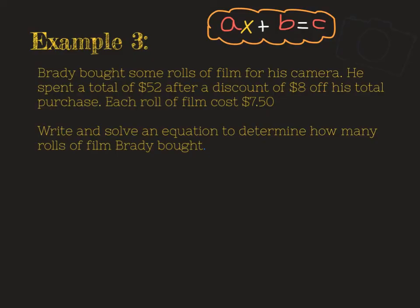Our third example tells us that Brady bought some rolls of film for his camera. He spent a total of $52 after a discount of $8 off his total purchase. Each roll of film cost $7.50. We're being asked to write and solve an equation to determine how many rolls of film Brady bought. And we're going to say that r is our rolls. That'll be easy to remember.